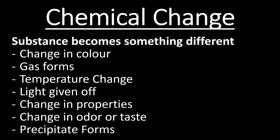There are some signs to show you when a chemical change occurs. You're looking at things like a change in color, a gas forming, a temperature change whether it heats up or cools down, light being given off, changes in the properties of the material, changes in the odor or taste, or forming what's called a precipitate — which we'll look at in a little bit.